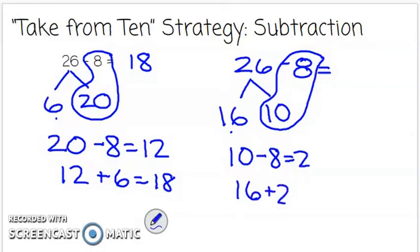So 16 plus 2 equals 18. Therefore 26 minus 8 equals 18.